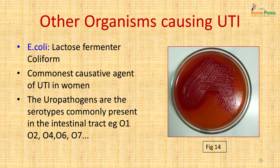E. coli is the most common organism obtained from urinary tract infections and the commonest causative agent in women. On MacConkey's medium, it gives pink lactose-fermenting colonies — differentiated from the non-lactose-fermenting Proteus colonies seen in this patient. The uropathogenic E. coli serotypes are the early O types: O1, O2, O4, O6, O7 etc., which inhabit the intestinal tract and cause UTI, while diarrhea is caused by the later O types.